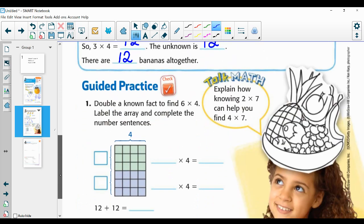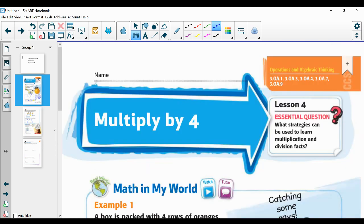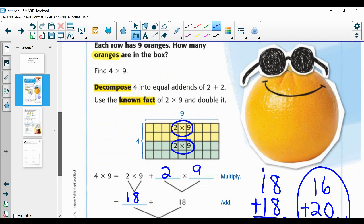Okay, let's look at guided practice. You're going to pause the video when I tell you to, so you can find the answer and then check back with me when you start the video again. So number one, double a known fact to find 6 × 4. Label the array and complete the number sentences. So first of all, I want you to label the array. That's like what we did on the first page right down here where the array is labeled 2 × 9, 2 × 9.